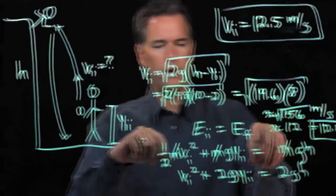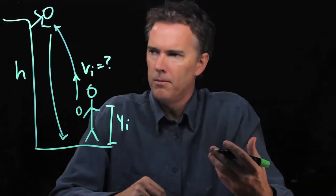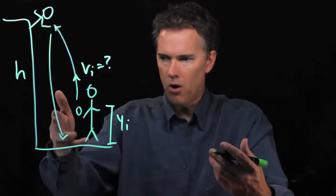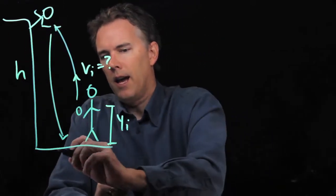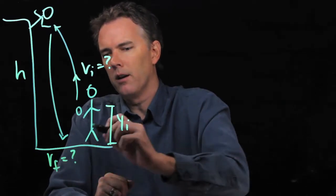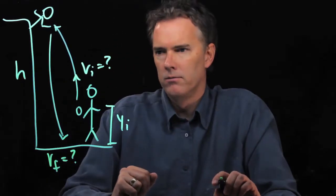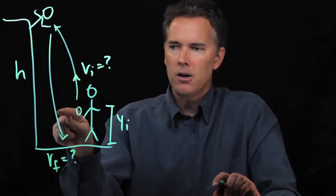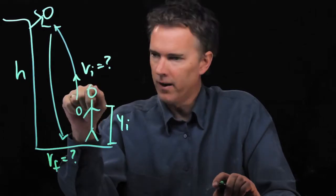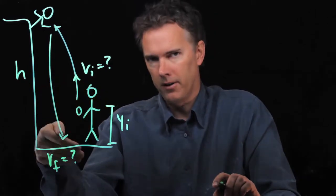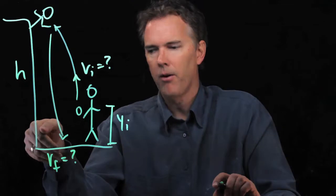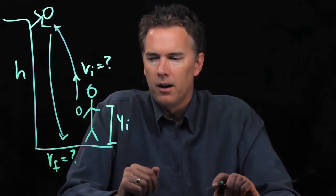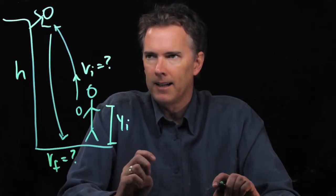Now let's ask a follow-up question. After your friend grabs the ball, they let it go and drop it from rest, and it falls all the way down to the ground. How fast is it going when it hits? Remember, when it comes back down to our launch height it should be going 12.5 meters per second again, but it has to travel a little further to reach the ground, so it will be going a bit faster than 12.5 meters per second.